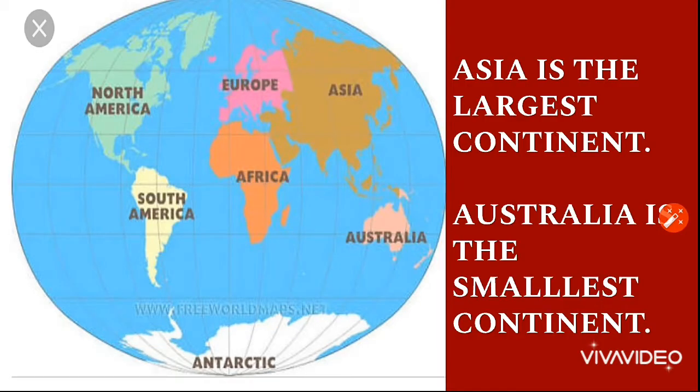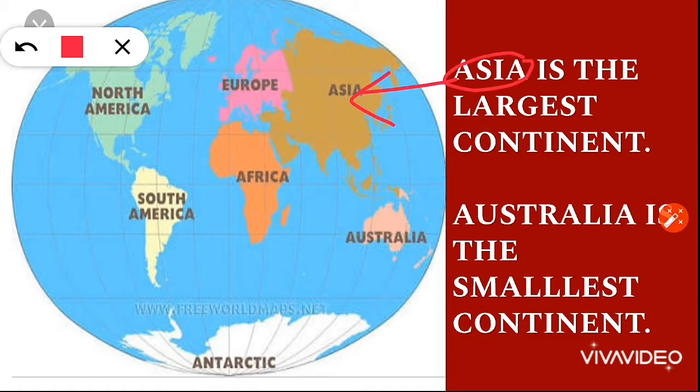Now, let us see about the largest and the smallest continent. Out of all the seven continents, Asia is the largest continent, and India is a country which is located in the continent Asia. Australia is the smallest continent.